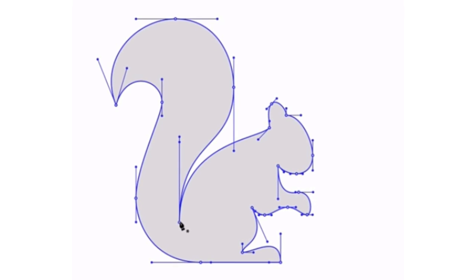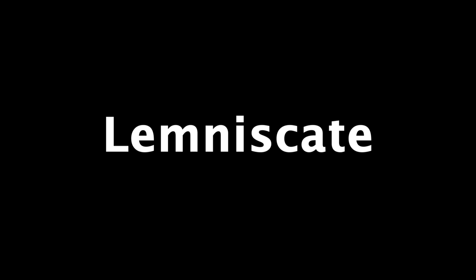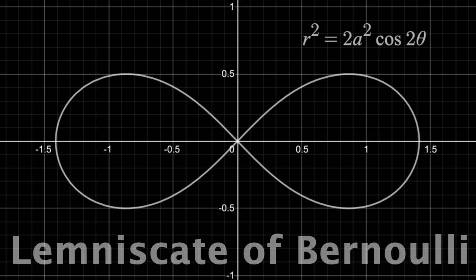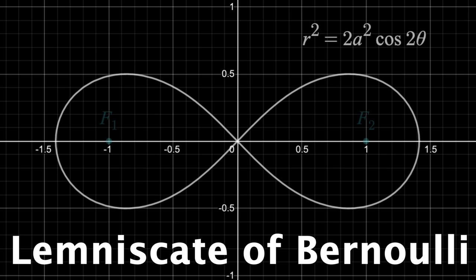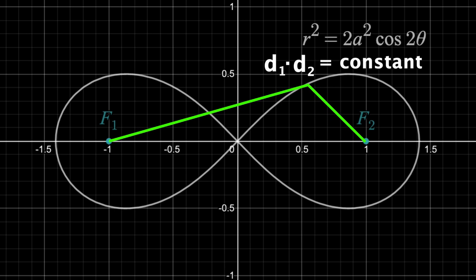That might have been a new type of curve for some of you, but this next one will probably be more familiar, and that's the Lemniscate. Although you've probably never seen it like this. The Lemniscate is basically a figure eight, but here we have a specific kind called the Lemniscate of Bernoulli. It has two focus points, and mathematically, this is defined as all the points where if you take the distance from each focus and multiply those values together, you get some constant, regardless of where you are on the curve.